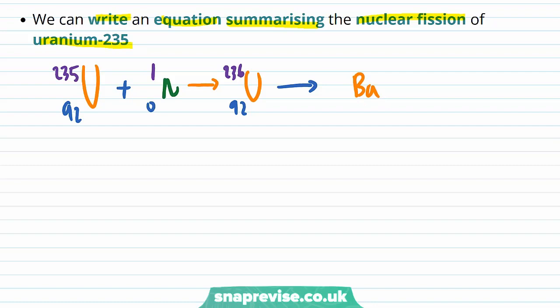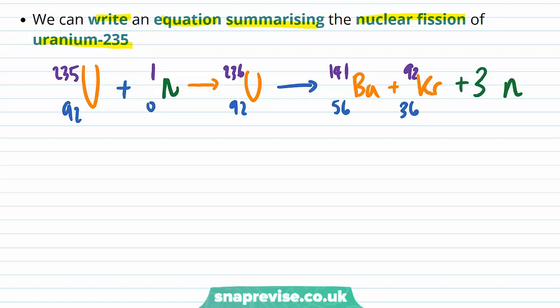The product nuclei are barium with a nucleon number of 141 and a proton number of 56, and krypton with a nucleon number of 92 and a proton number of 36. We also produce three neutrons, each with a nucleon number of 1 and a proton number of 0.